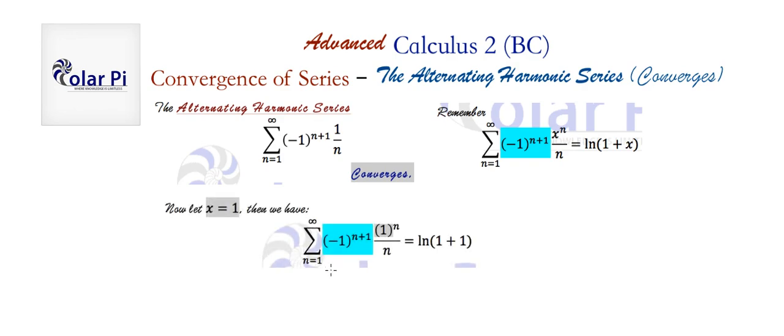So letting x equal one, we see as I just said that the left hand side, this here, turns into the alternating harmonic series. The right hand side turns into ln of one plus one, and therefore, the alternating harmonic series converges to the natural log of two.